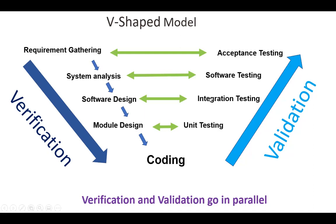The testing units are: unit testing, integration testing, system testing, and acceptance testing. At every stage, test plans and test cases are created to verify and validate the product according to the requirement of that stage. This makes both verification and validation go in parallel, and this is why this model is also known as the verification and validation model.